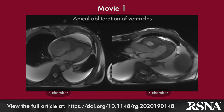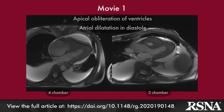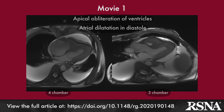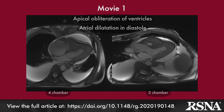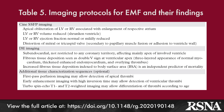Fibrotic involvement of the papillary muscles causes distortion of the mitral and tricuspid valves, leading to regurgitation and marked atrial dilatation. Ventricular thrombi are frequently present. MR is more sensitive and specific in the detection of ventricular thrombi than transthoracic or transoesophageal echocardiography. Table 5 summarizes the MR protocols for EMF and the associated MR findings on the various sequences.